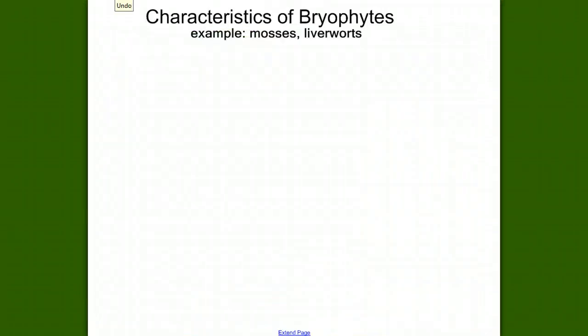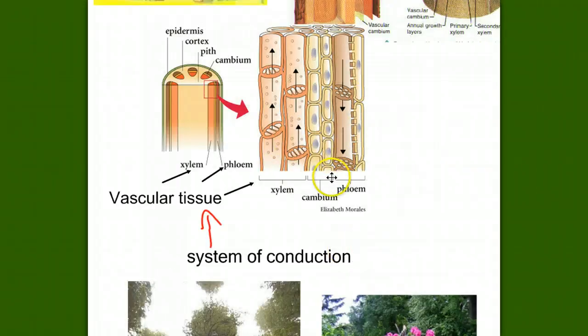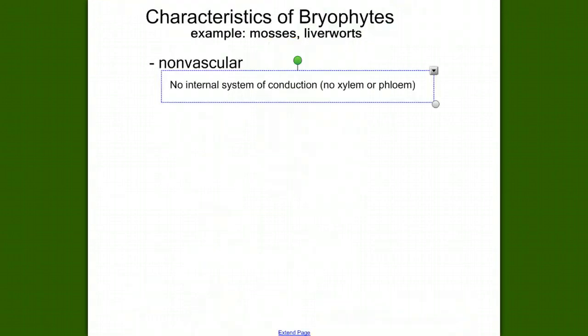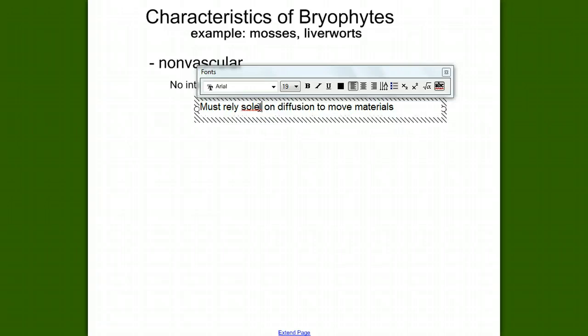The defining characteristic of the bryophytes is that they are non-vascular. What does this mean, vascular or non-vascular? It means that they have no internal system of conduction. They don't have xylem or phloem to transport water or sugars throughout the plant body. Lacking this internal system of conduction means that mosses, or bryophytes, must rely solely on diffusion to move materials through their body.